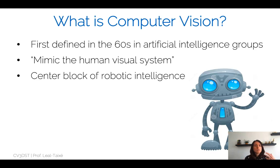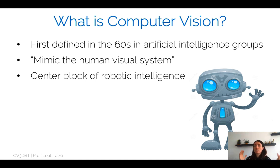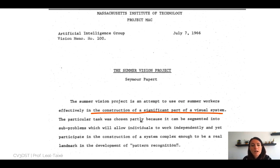Let me briefly motivate you for this course. What is computer vision? It turns out computer vision was a problem first defined in the 1960s, so it's been around for quite some years. The whole idea was to tackle the problem of mimicking the human visual system — this was supposed to be the central block of robotic intelligence. This was actually defined in 1966 as a summer vision project — something to be developed and solved in three months. Essentially, in one summer they wanted to construct a significant part of the visual system and solve computer vision.